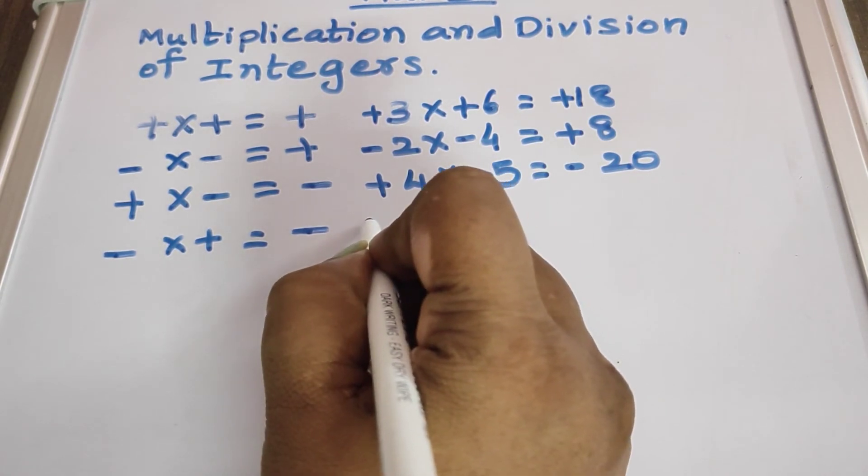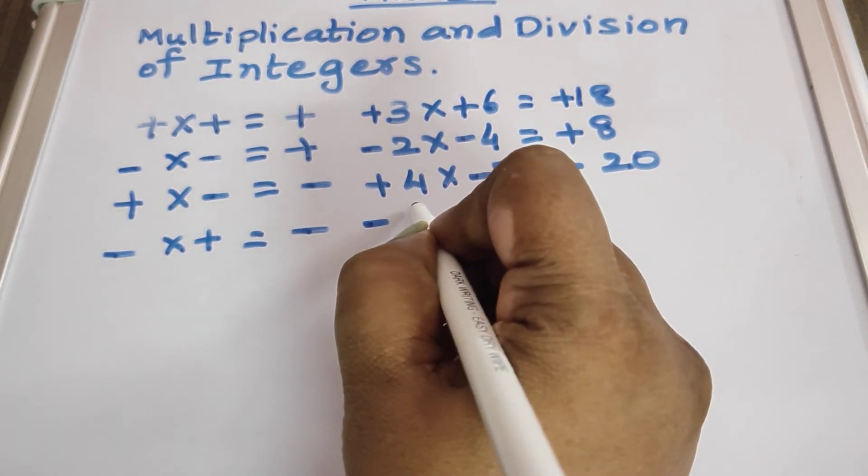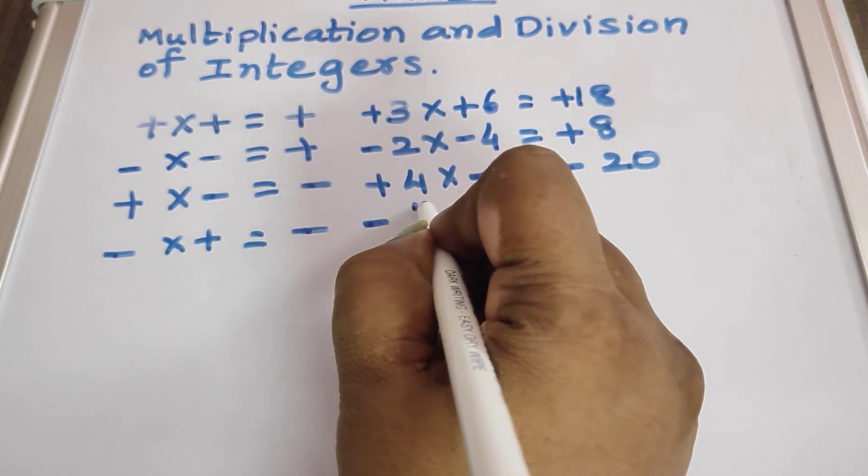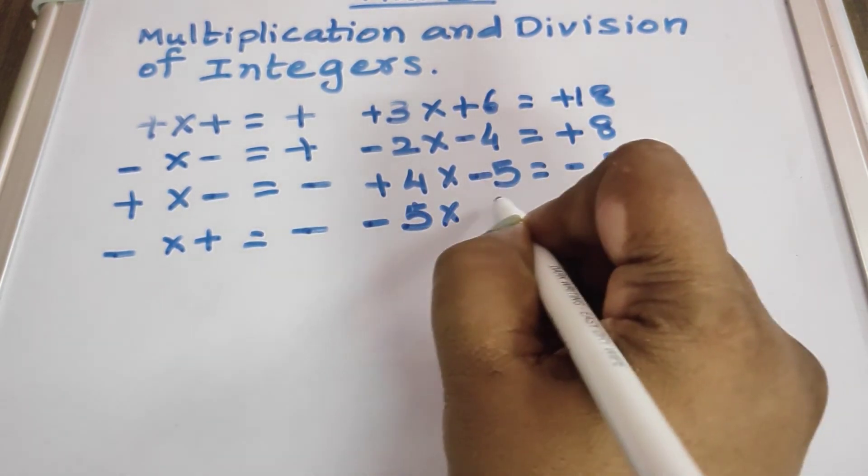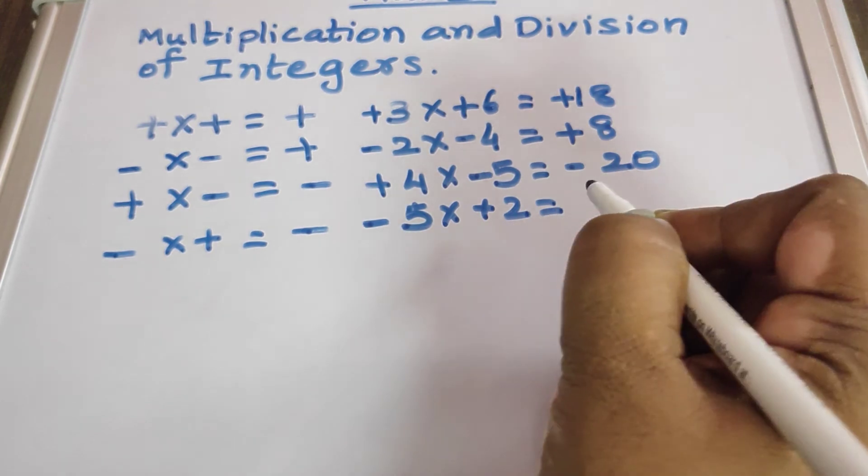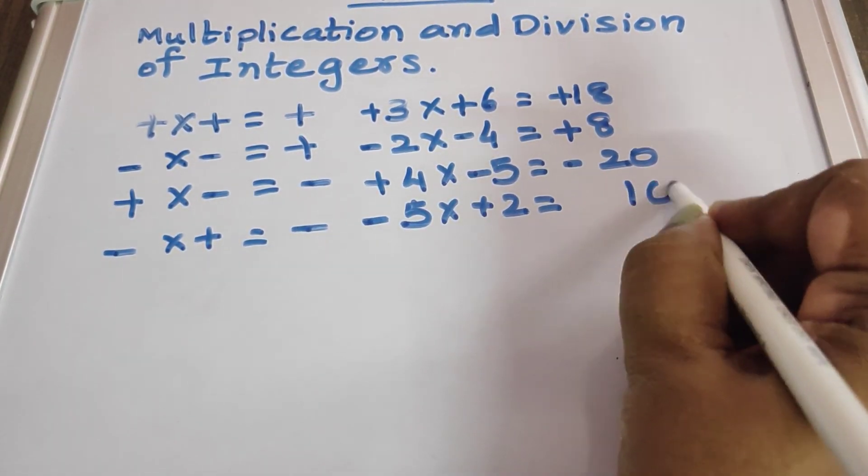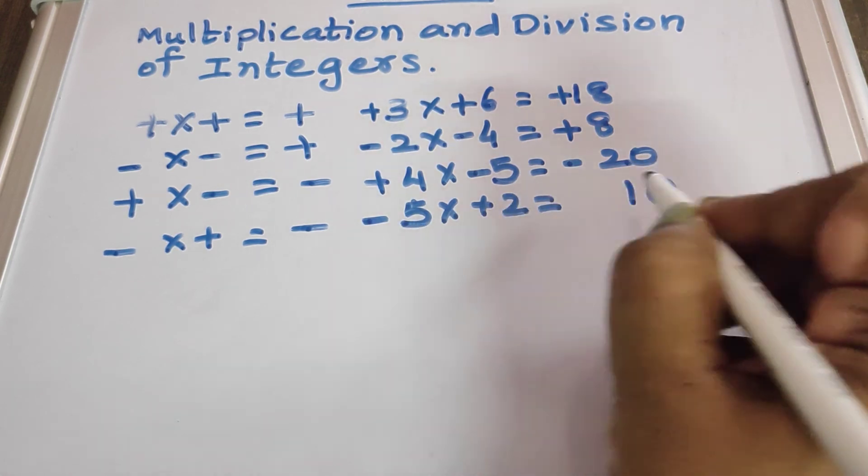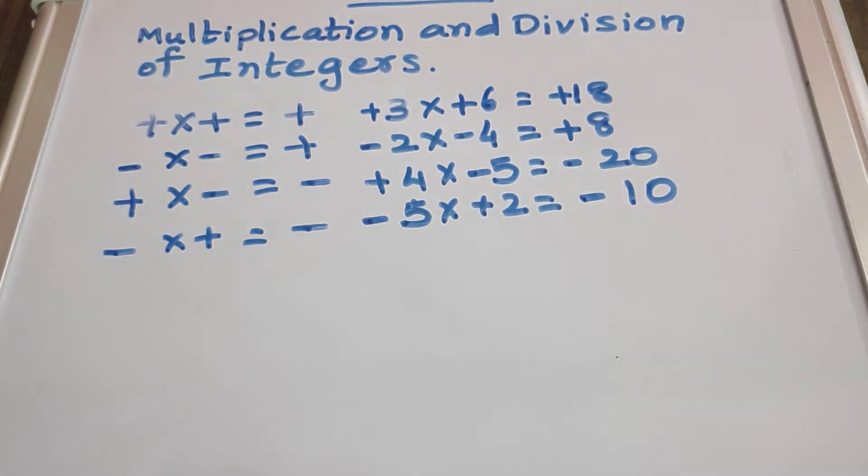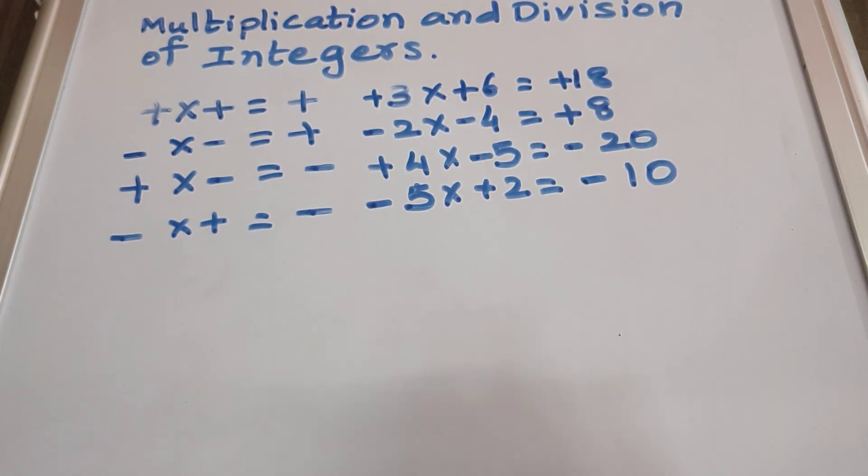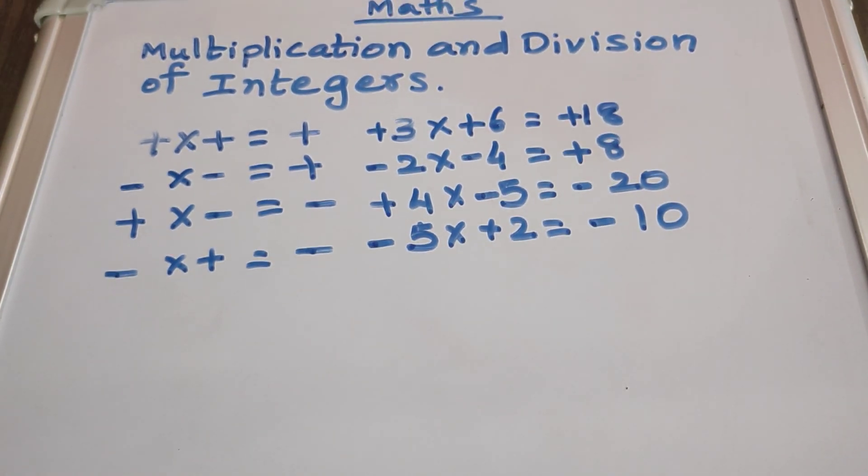And let's see, minus 5 into plus 2. Here, 5 2's are 10, and minus into plus is minus, minus 10. Hope you understood.